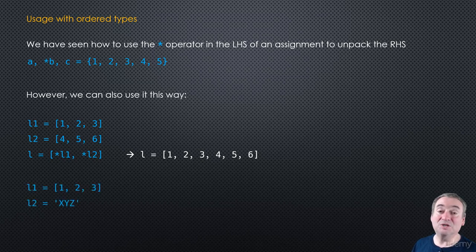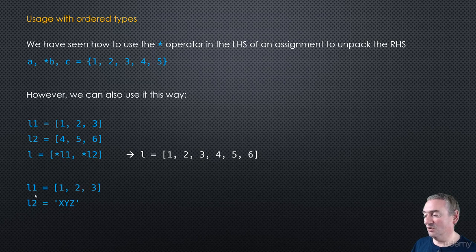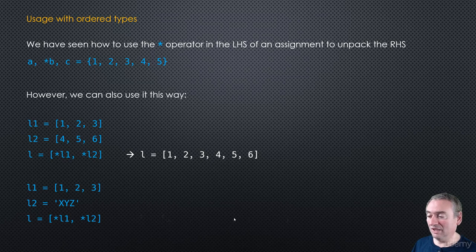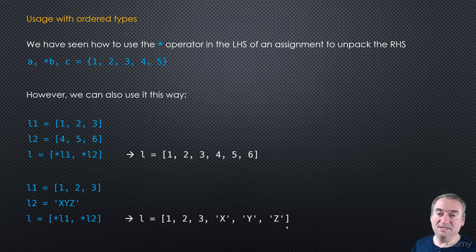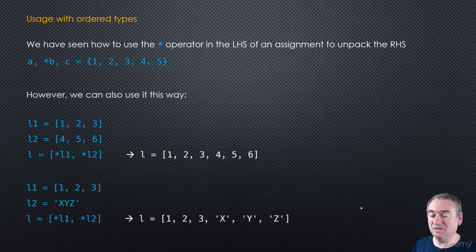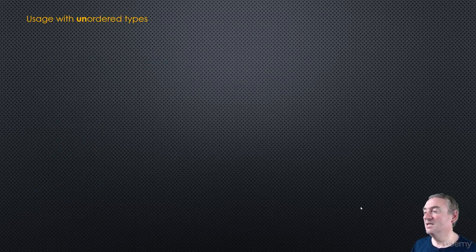Of course it works with strings as well — it works with any iterable. If L1 is [1, 2, 3] and L2 is ['X', 'Y', 'Z'], doing [*L1, *L2] will end up with 1, 2, 3, X, Y, Z. This is how you can use the star operator on the right-hand side of an expression.